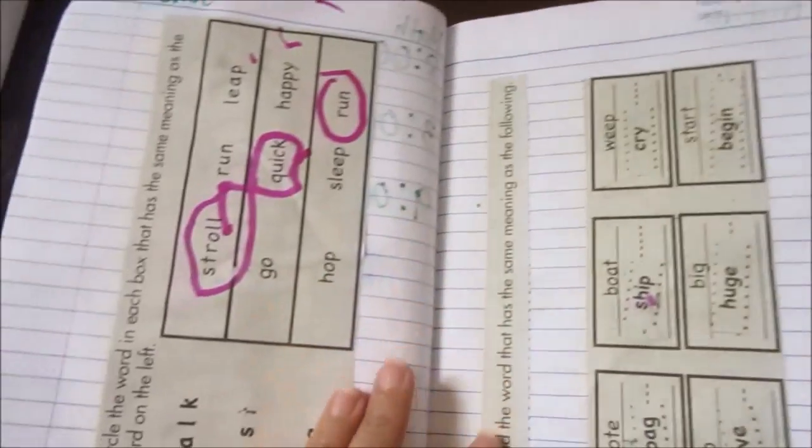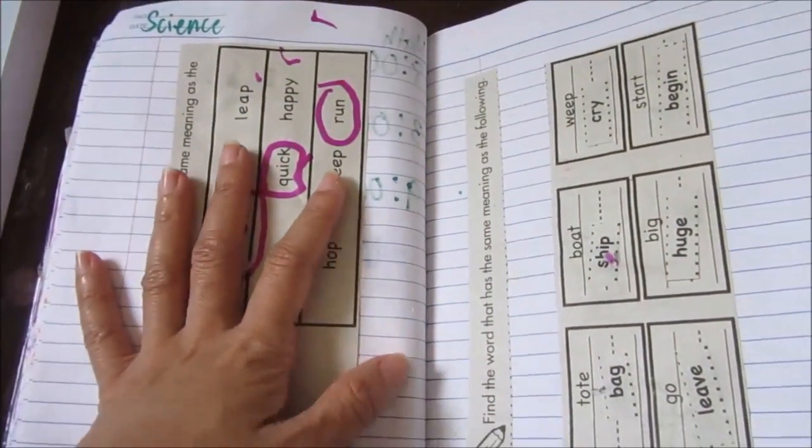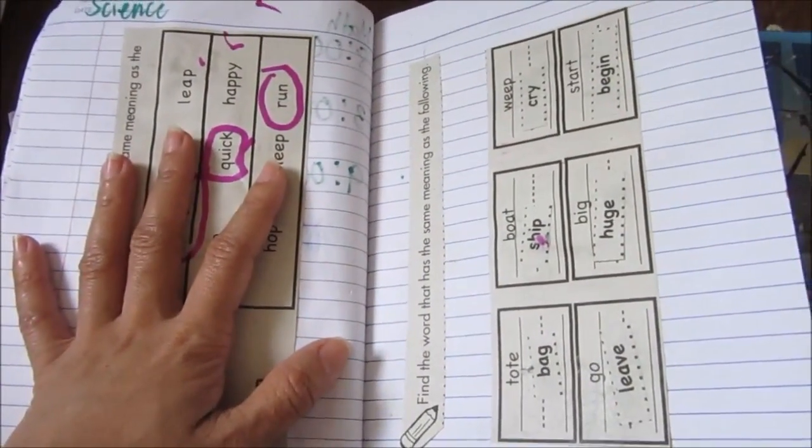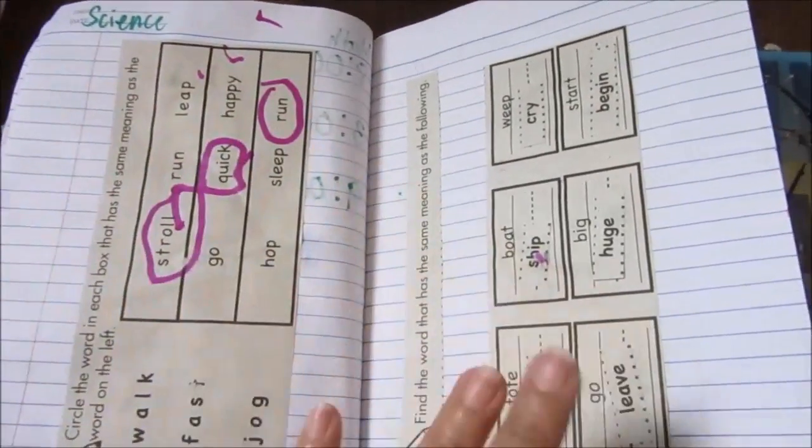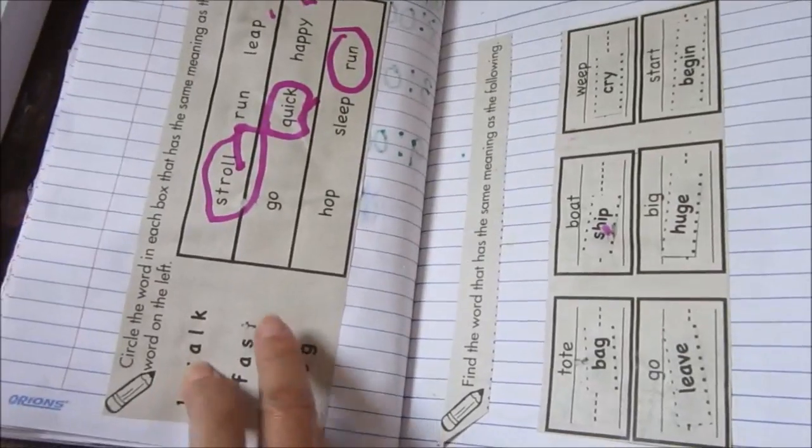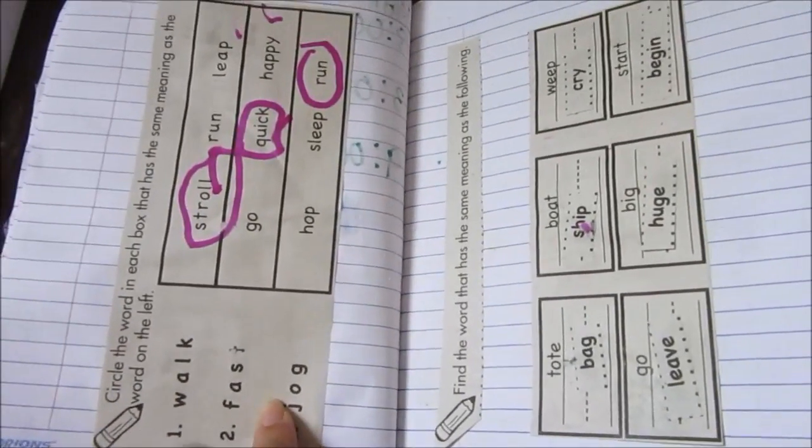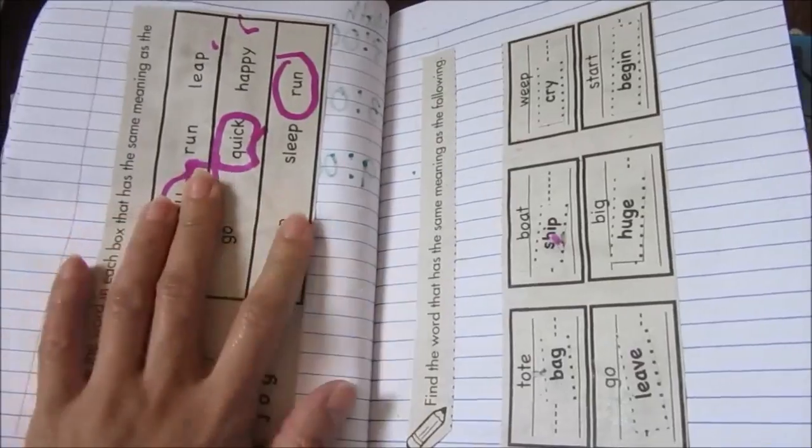And then for science, if you're new to my channel, this is from a book called Learning English Through Science. So for this one, these are action words and the lesson is synonyms.